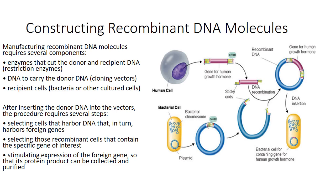We will discuss the construction of recombinant DNA molecules — that is, the manufacturing of recombinant DNA molecules. The important components are: first, the donor and recipient DNA; then restriction enzymes used for cutting. Second is the vector — a piece of DNA that has the ability to carry a gene into the cell.